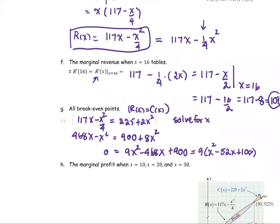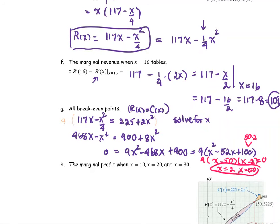Factoring x² - 52x + 100: since 100 = 50 × 2, and both factors are negative, we get (x - 50)(x - 2) = 0. Therefore, the breakeven points are x = 2 and x = 50.